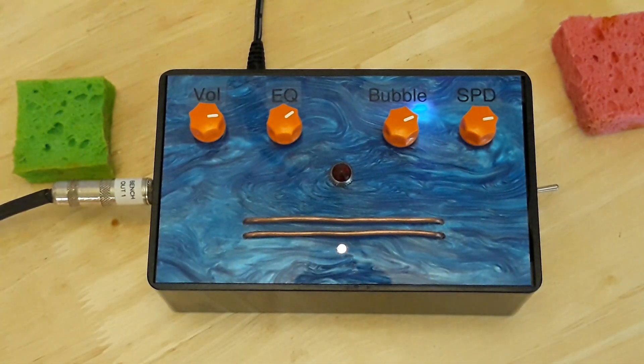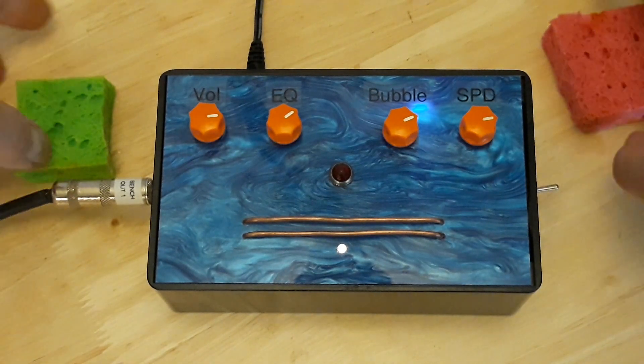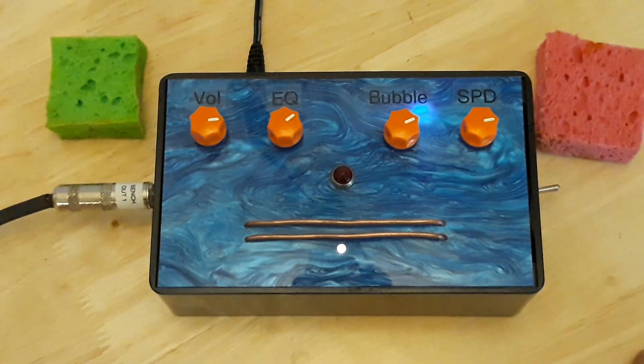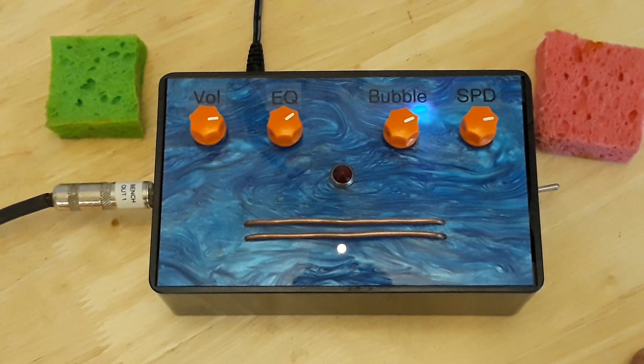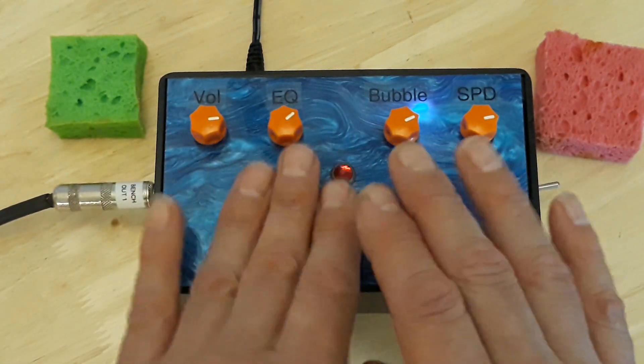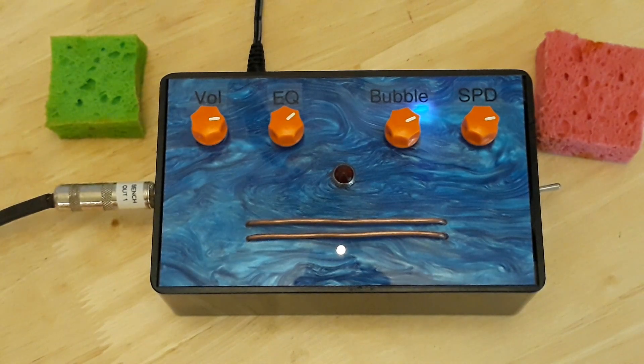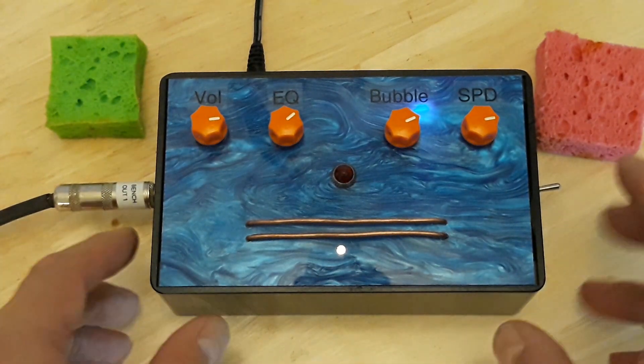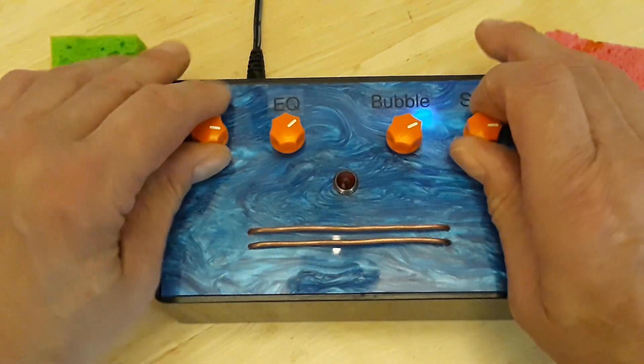All right, so what is this? This is, I'm calling it the Quintronics White Noise Bongo. And basically it's a white noise generator with a phase shifter in there. Let's open the hood.